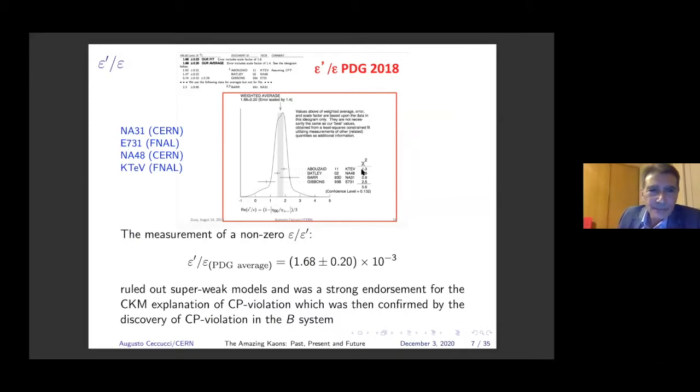After these four main experiments, there's absolutely no doubt that epsilon prime over epsilon is different from zero. This ruled out weird super weak models and was a strong endorsement for the explanation of CP violation within the standard model by now, which we call the Cabibbo-Kobayashi-Maskawa explanation of CP violation. This was then confirmed by the discovery of CP violation in the B system, which is now a very big branch of studies in flavor physics.